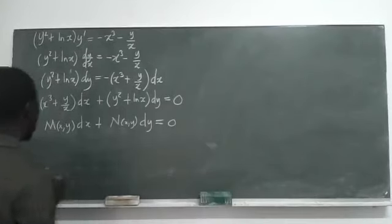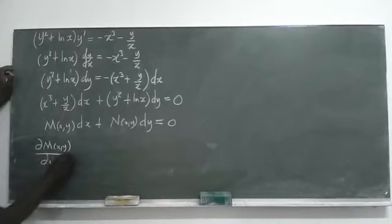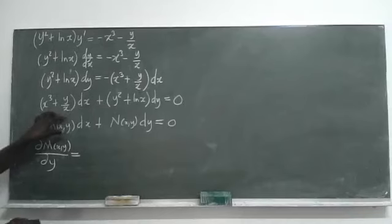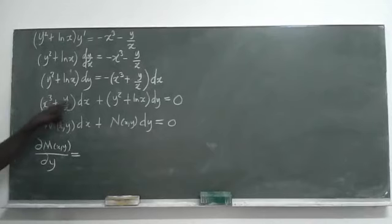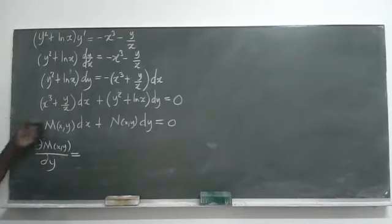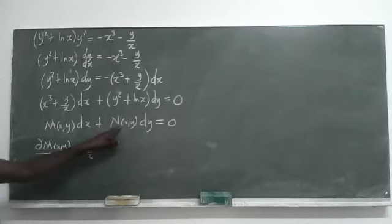The partial derivative of M with respect to y: M is x cubed plus y over x. The x cubed term is a constant with respect to y, so it becomes zero. Then 1 over x is a constant, and the derivative of y is 1, so we get 1 over x.